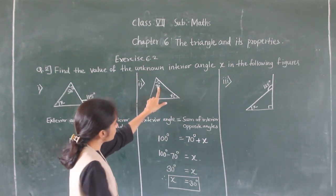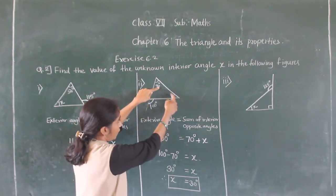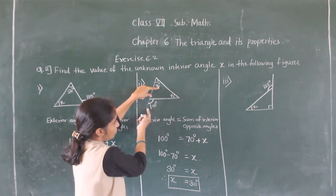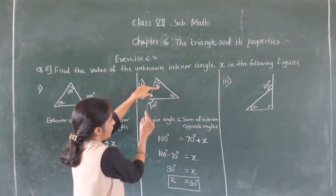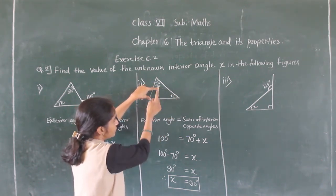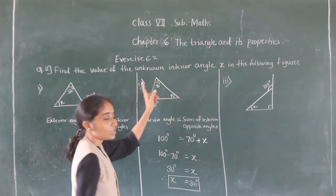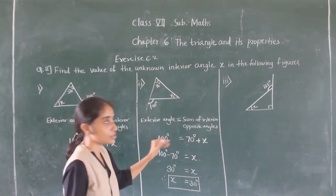We can verify: 70 plus 30 equals 100 degrees. So that satisfies the exterior angle property — the exterior angle equals the sum of both interior opposite angles.